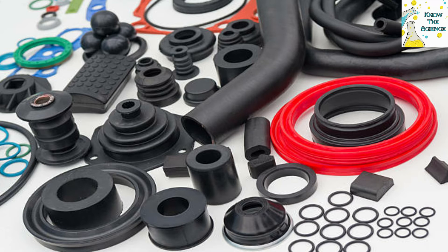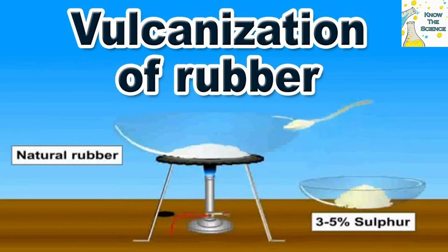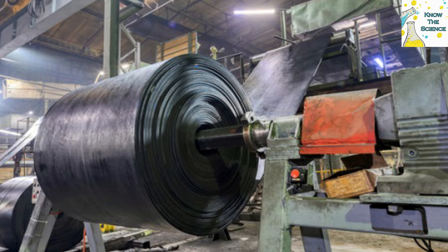The vulcanization process can be tailored to achieve different properties by adjusting the type and amount of vulcanizing agents and additives used. This flexibility allows manufacturers to produce rubber products with specific characteristics to meet diverse industrial and consumer needs.